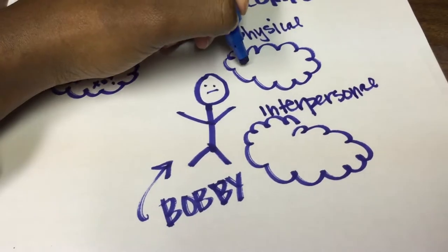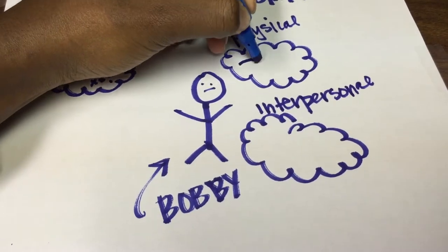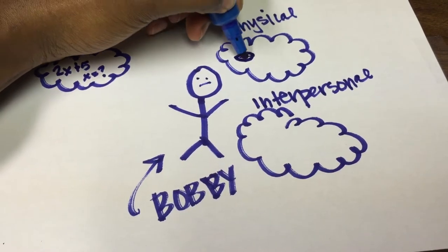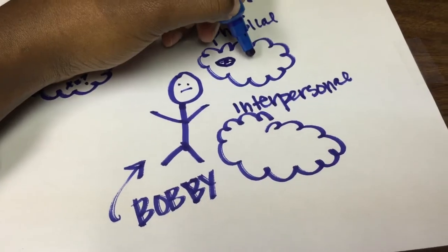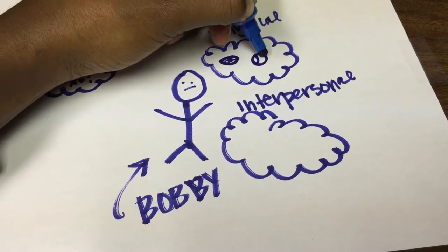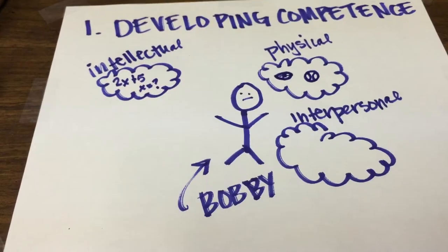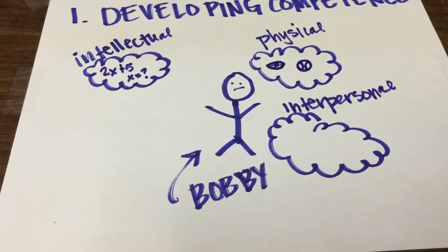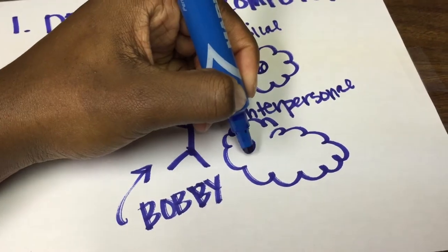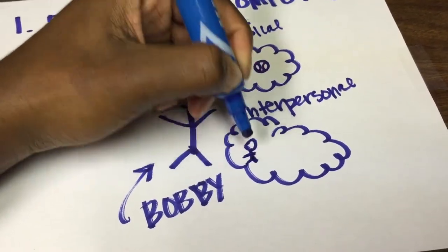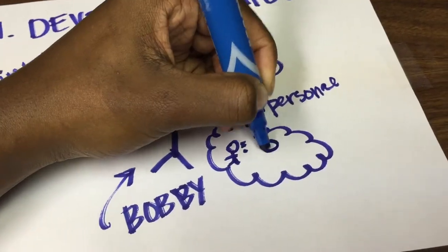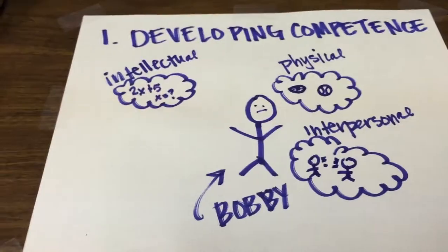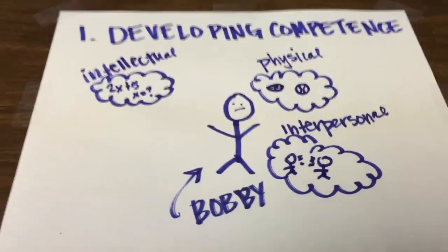On a physical note, Bobby can improve by participating in sports activities, like football and baseball, and that can easily be done through his fraternity for intramural sports. Interpersonally, Bobby can improve just by communicating with other members in the fraternity — other members in his new member class or with current active members.